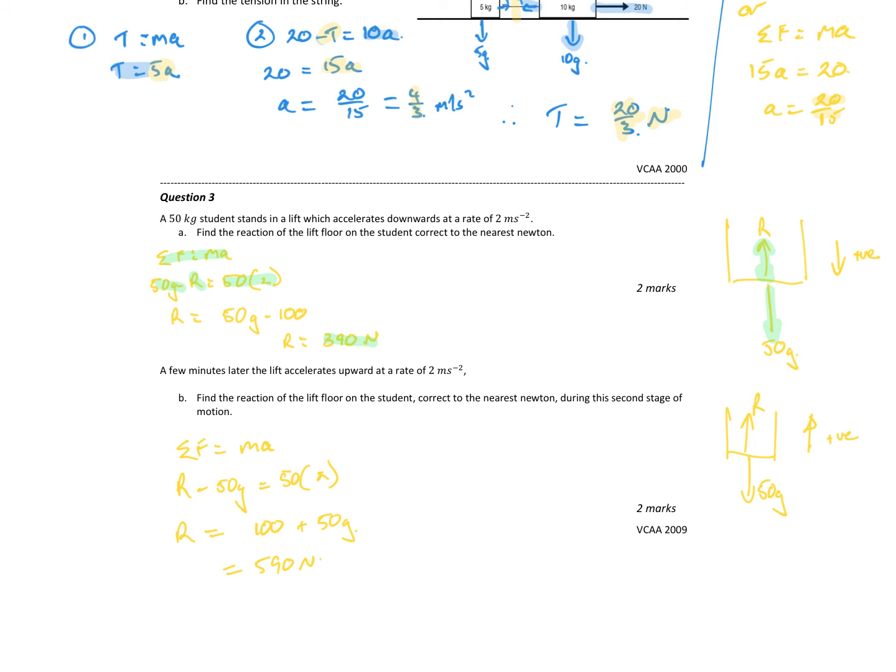A few minutes later the lift accelerates upwards at a rate of 2 meters per second squared. Same sort of scenario except this time I'm going to make positive as up, which means my resultant minus my 50g equals ma. We'll see that we have an increase since gravity is acting against us when we're traveling up. We have greater forces in play, 590 newtons.